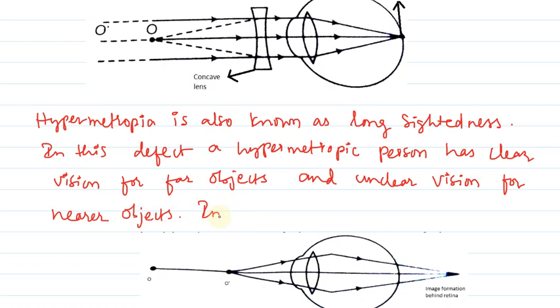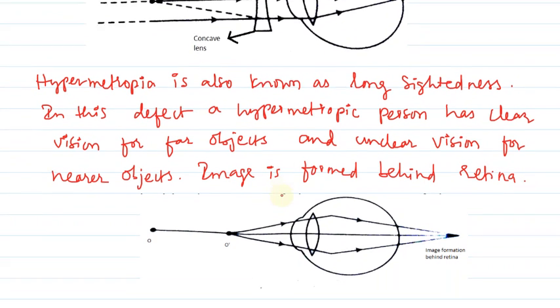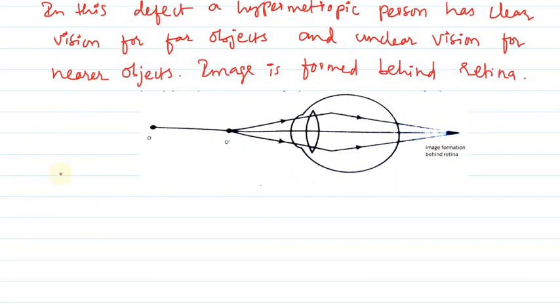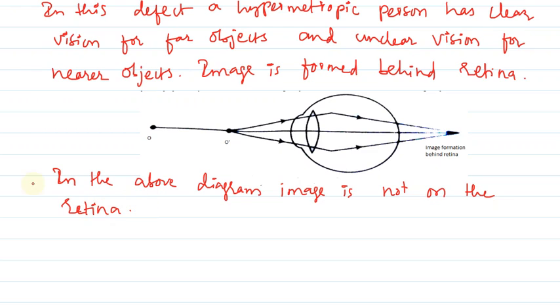Image is formed behind retina. In the above diagram, image is not on the retina. The image is formed behind the retina.